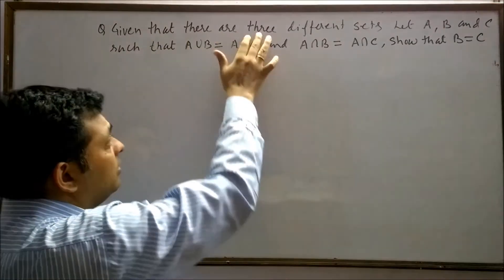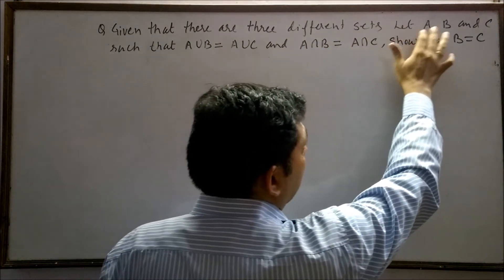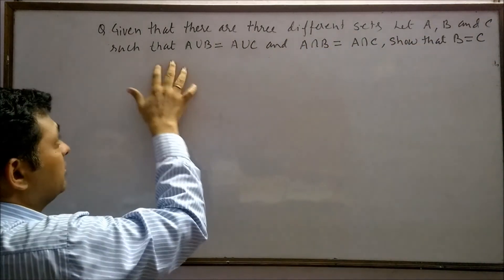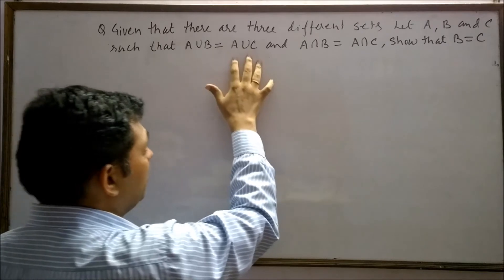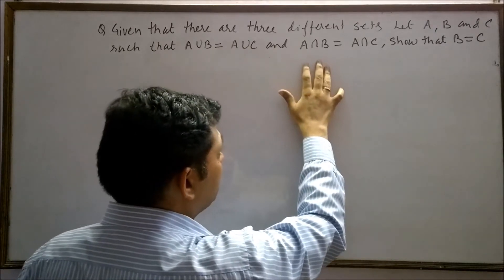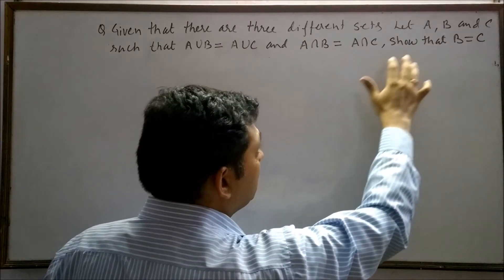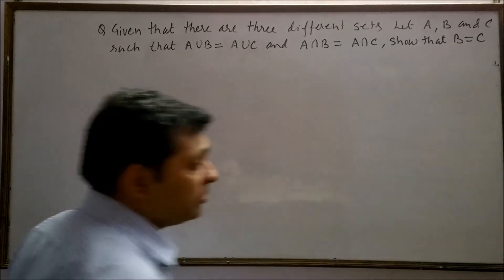The question says: given that there are three different sets A, B, and C, such that A union B is equal to A union C, and A intersection B is equal to A intersection C — prove that B is equal to C.